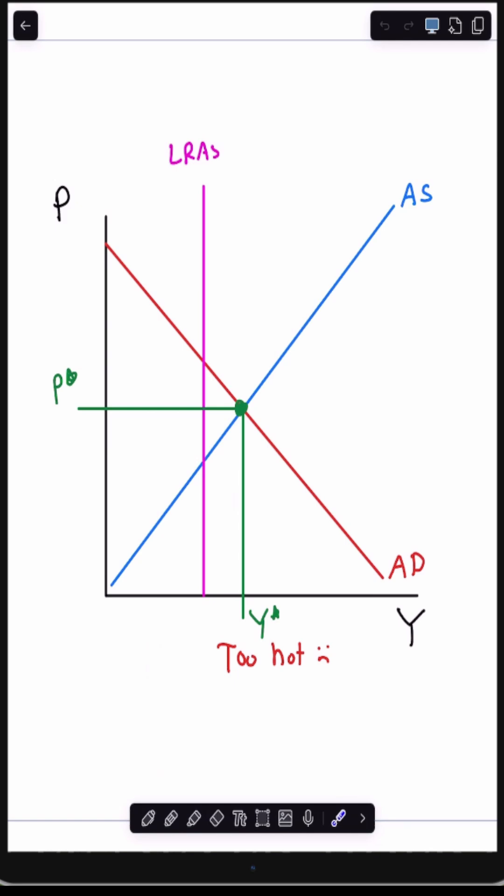If our aggregate supply curve and our aggregate demand curve meet to the right of the long run aggregate supply curve, the economy is too hot and we're happy in the short run, but we're going to have inflation in the long run.